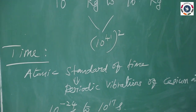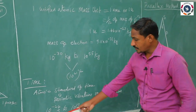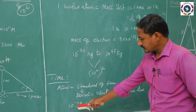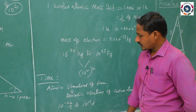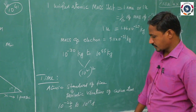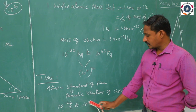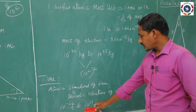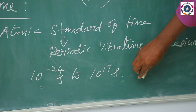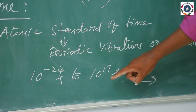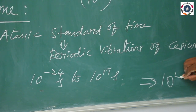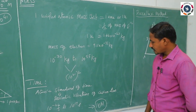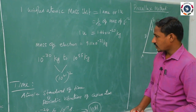10⁻²⁴ second is unimaginably small — it represents the lifespan of unstable nuclei. The half-life period of radioactive elements is in the range of 10⁻²⁴ second, and 10¹⁷ second is the age of the universe. As per the carbon radiometric dating method, the age of the universe is calculated as 10¹⁷ second. The total range is 10⁻²⁴ to 10¹⁷, which gives 10⁴¹ — similar to mass and length.